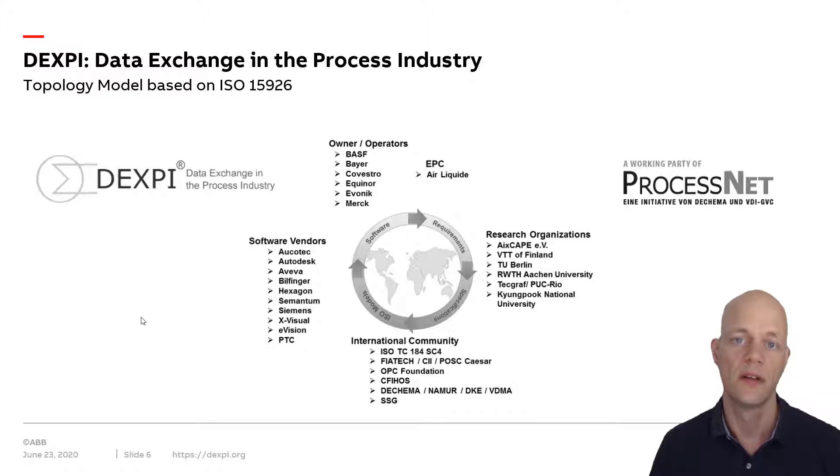The one big problem hampering these approaches is standardization. However, now we have the DEXPI initiative. DEXPI stands for data exchange in the process industries. This is an initiative by automation customers like BASF, Bayer, and Equinor, and most commercial software vendors like Autodesk, Aveva, Hexagon, Siemens. They are all on board to support this upcoming standard based on ISO 15926 for a common model for P&IDs which includes a topology model.